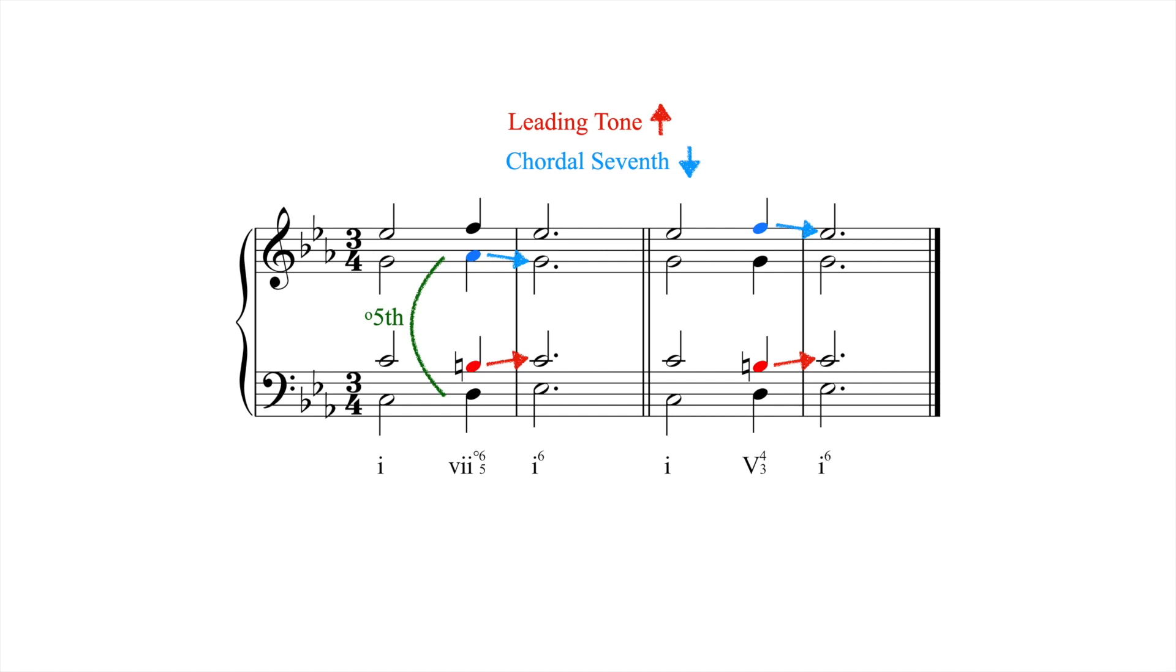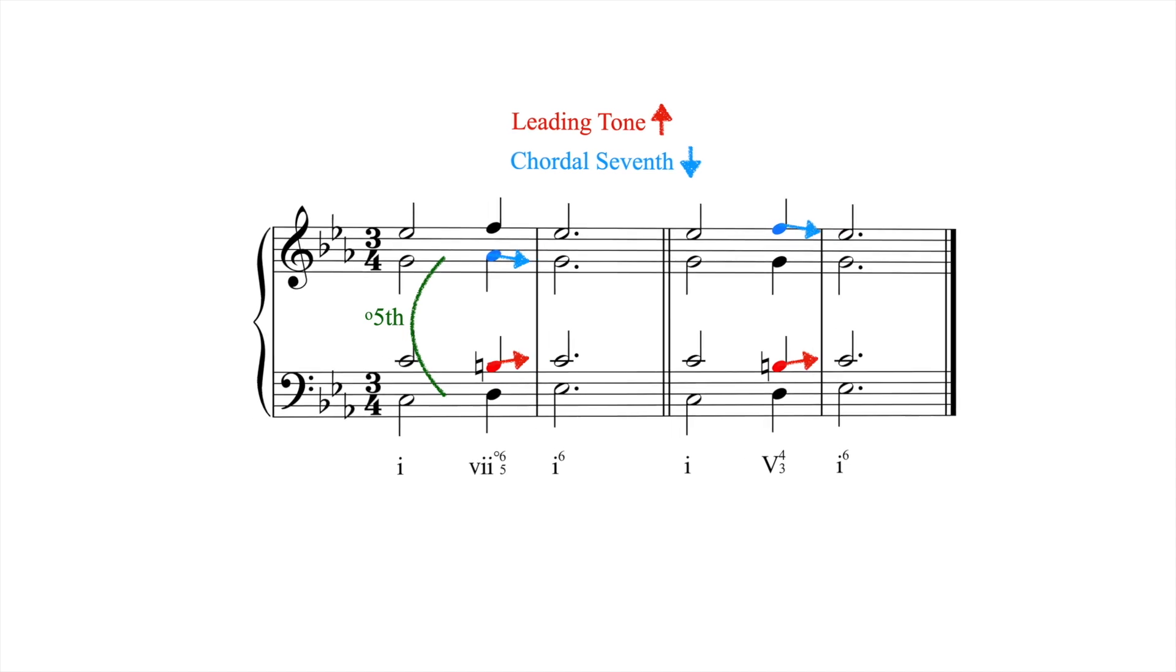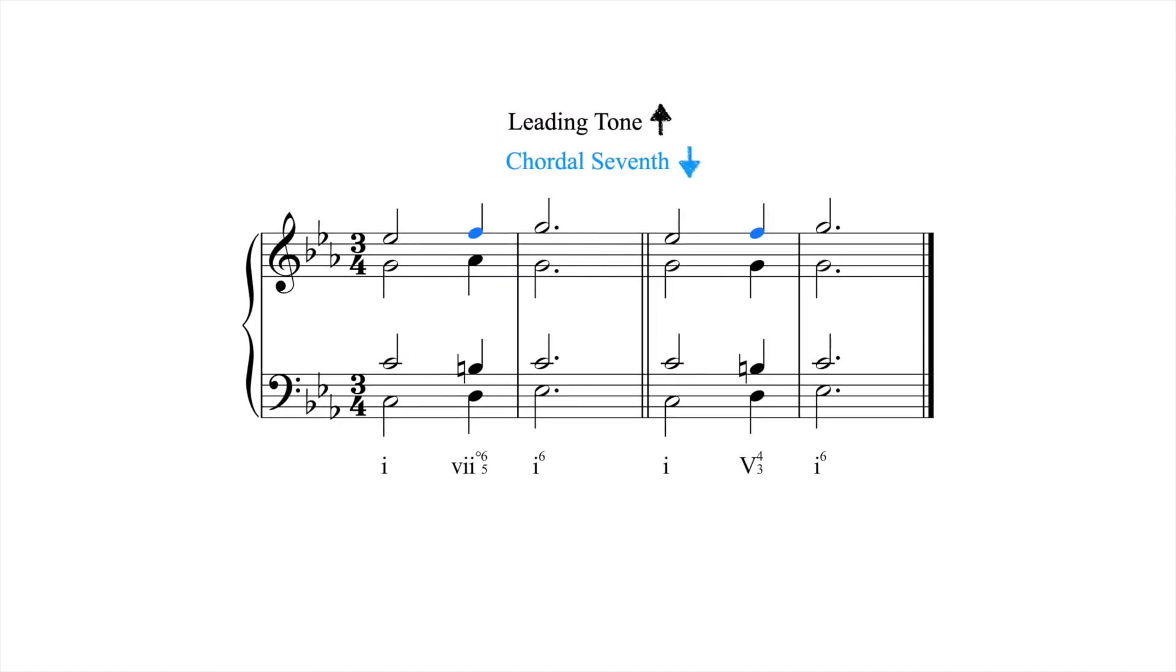There is, however, one important exception to the proper resolution of the diminished fifth. In the following two progressions, it's acceptable to not resolve the chordal 7th when the outer voices move in parallel tenths. Here, the counterpoint's richness and strong sense of direction attenuate the lack of resolution and soften the effect of the diminished fifth that moves directly to a perfect fifth.